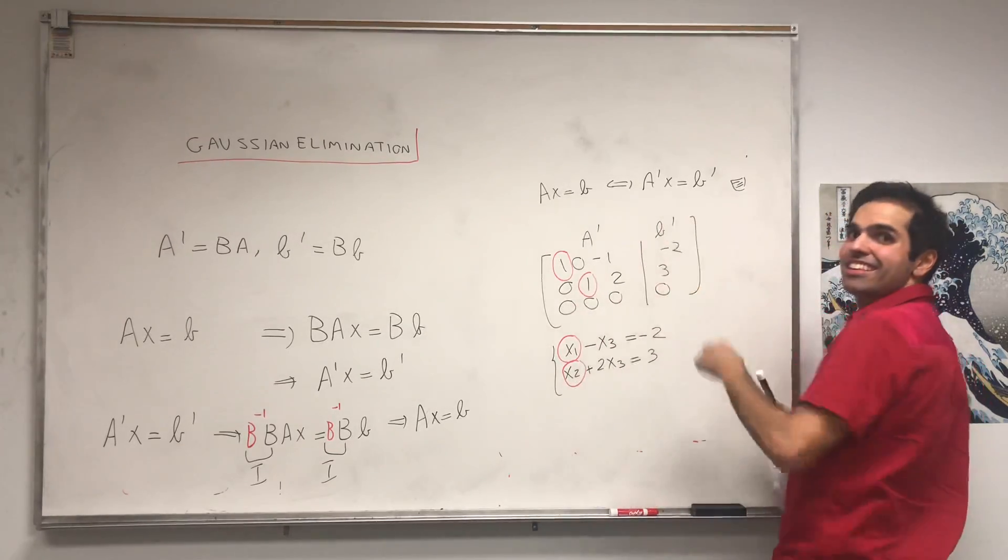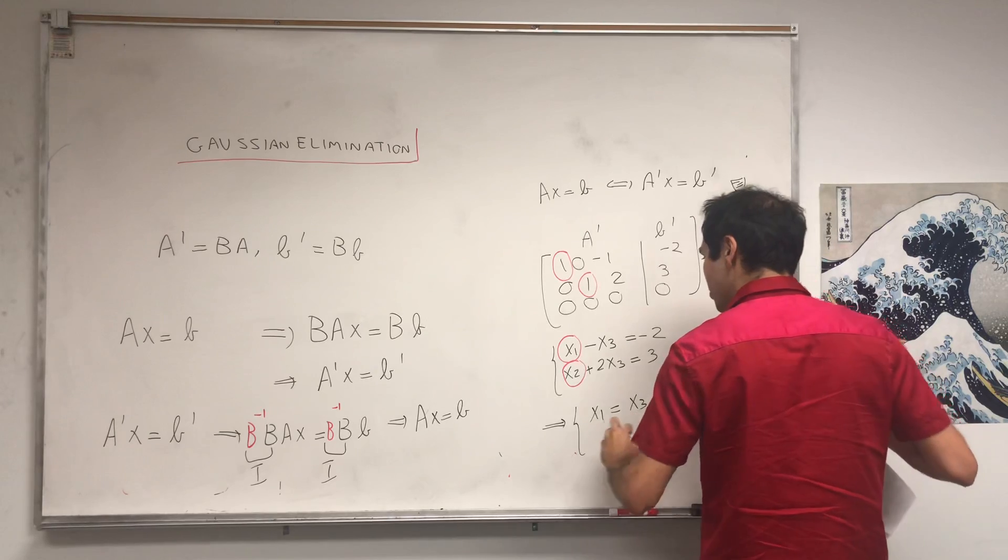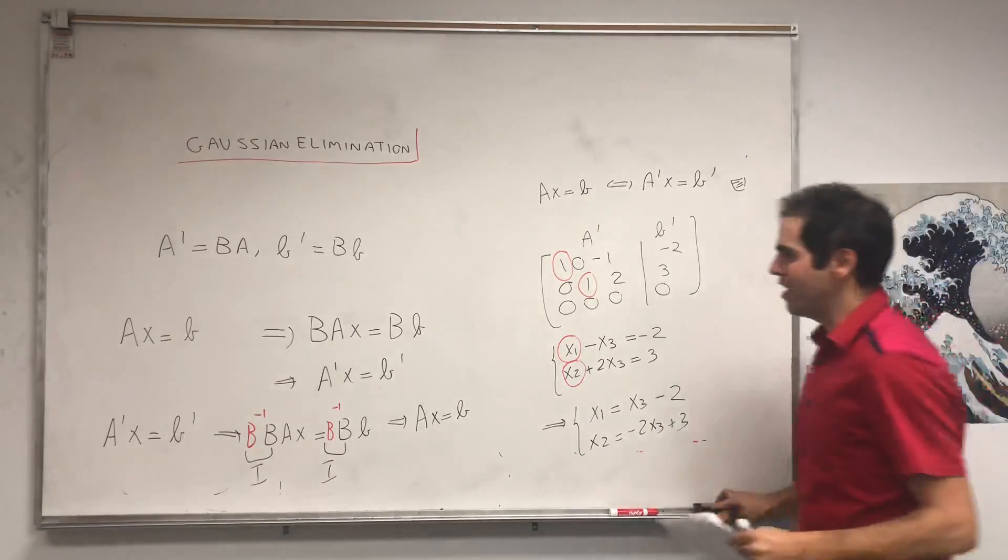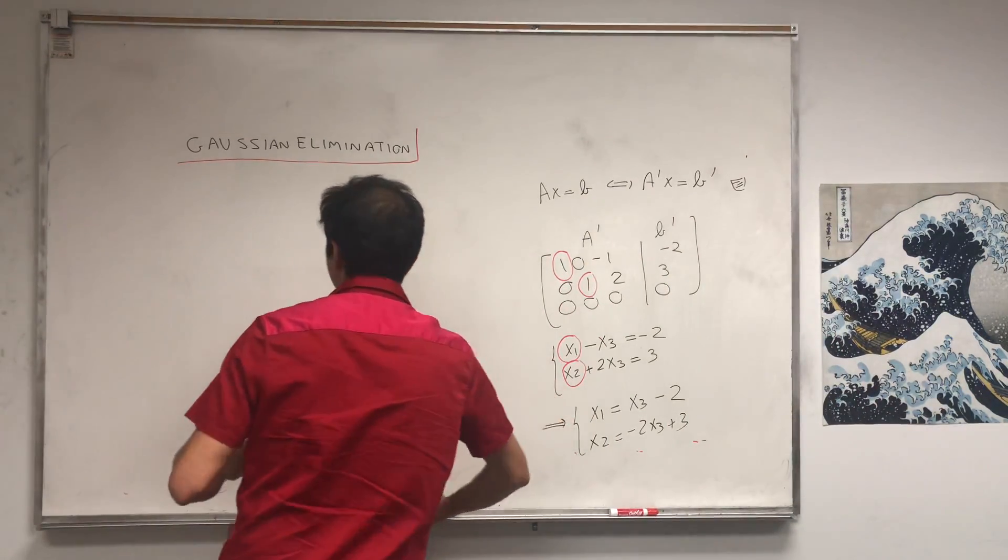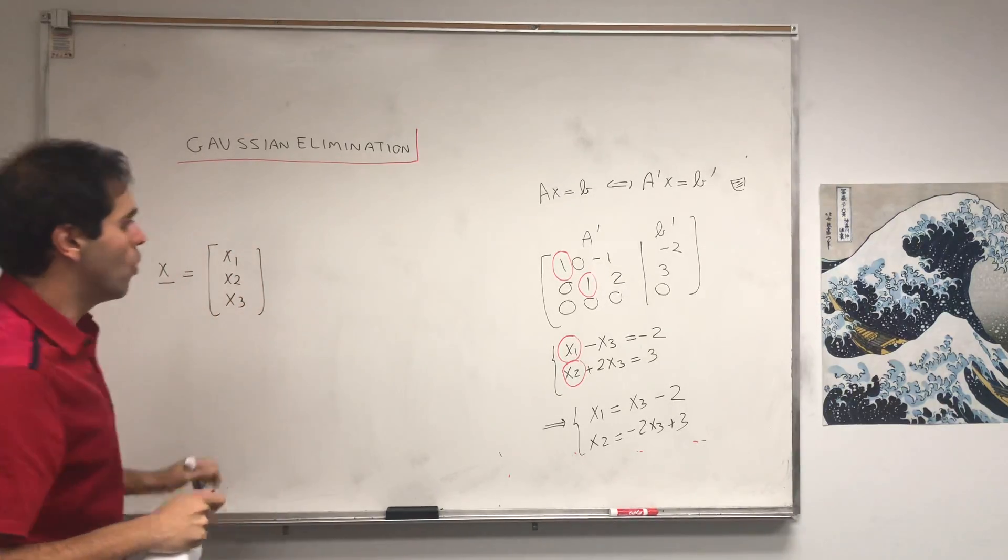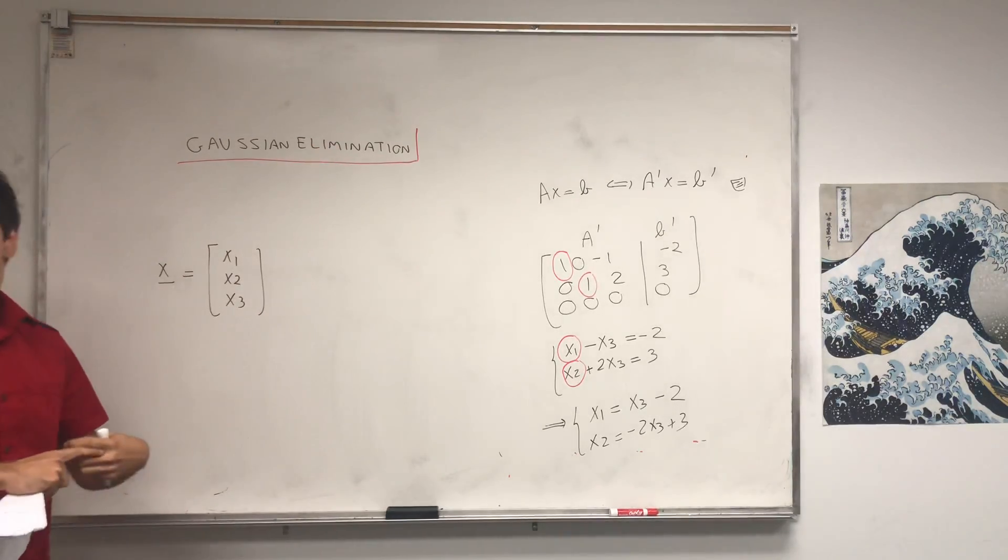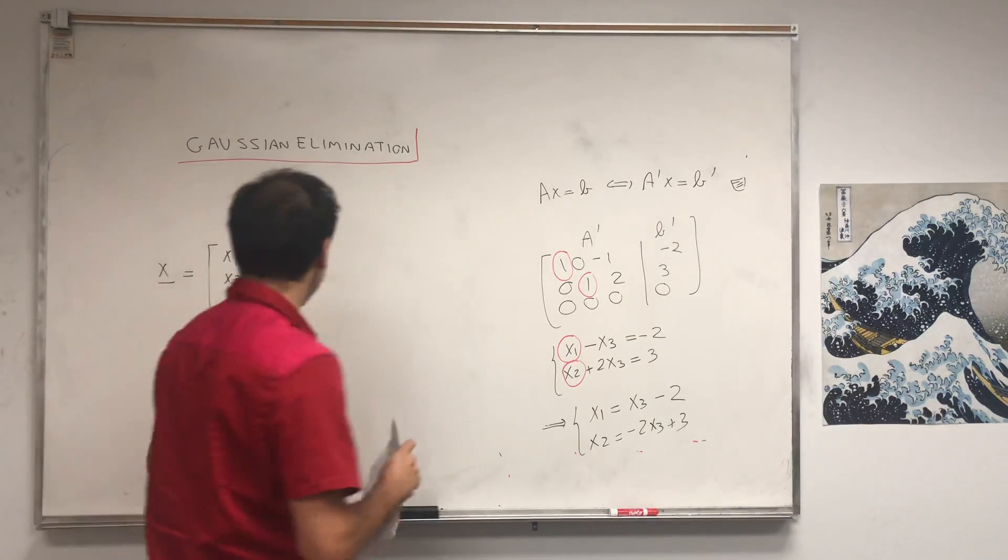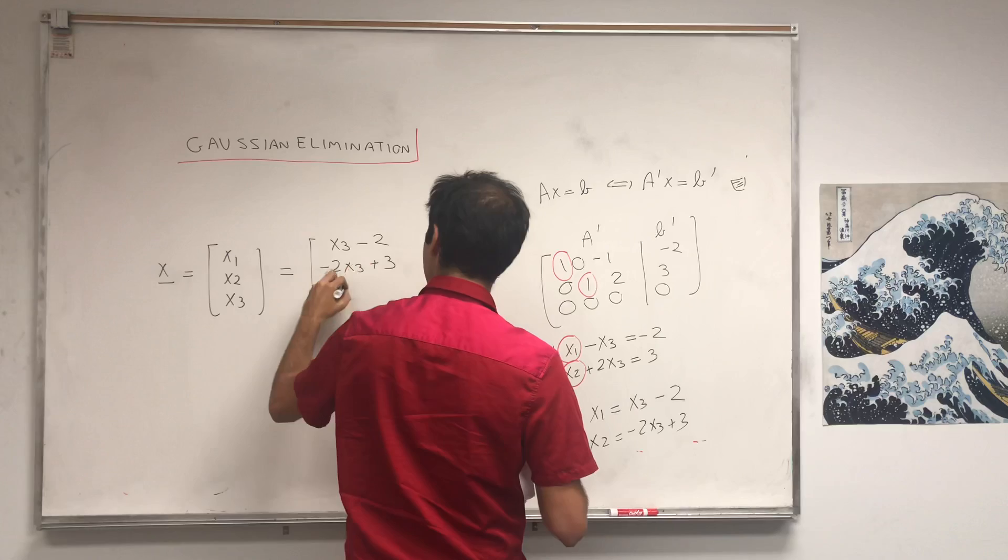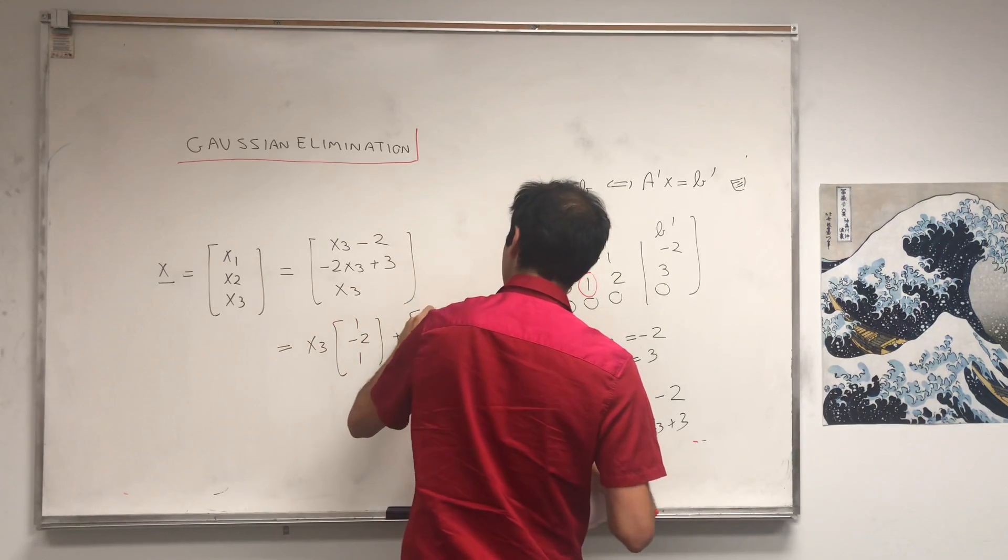Given that there exists a solution, of course. Because what do we have here? We get x1 is x3 minus 2, and x2 is -2x3 plus 3. And then we can just solve for x, which is [x1, x2, x3]. Which, remember, x is the solution of the original system, which is the same as the solution of this system. So because we can solve this easier system just by reduced row echelon formness, plus we can solve the original system as well, which in this case becomes x3 minus 2, -2x3 plus 3, and then x3, which you can write as x3 times [1, -2, 1] plus [-2, 3, 0].